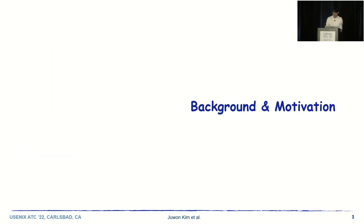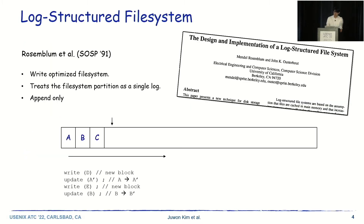Let's start with background and motivation. In 1991, Rosenblum developed a log-structure file system. The log-structure file system is designed to optimize write performance. It treats the file system partition as a single log and writes data blocks in an append-only manner. This figure shows how the log-structure file system appends data blocks. For the write of a block D, the block D is appended at the end of the log.